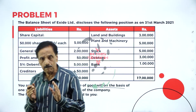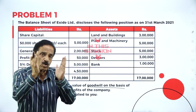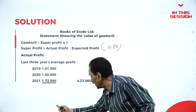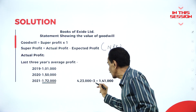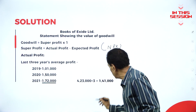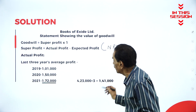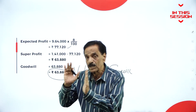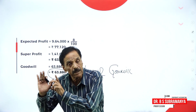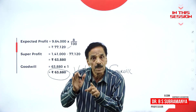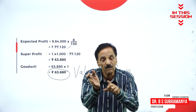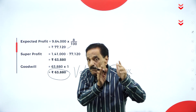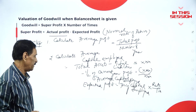When you want to calculate the capital employed: total assets minus total liabilities. Add the 3-year profit — it will come to 4,23,000 divided by 3, which is 1,41,000 as the average profit. Whatever value is given in the balance sheet is called book value. Whatever value is given in the adjustment is called market value. This is your expected profit.